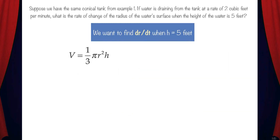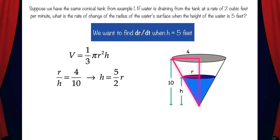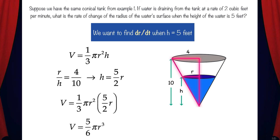Just like the previous example, we'll start with the equation for the volume of a cone: V equals one-third pi r squared h. We have a similar triangle relationship where r over h equals four-tenths. In this case, we'll solve for h, giving h equals five over two r, and we'll substitute that in. This gives us V equals five over six times pi r cubed. Now we have an equation for the volume in terms of r only.